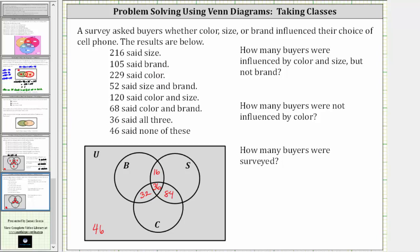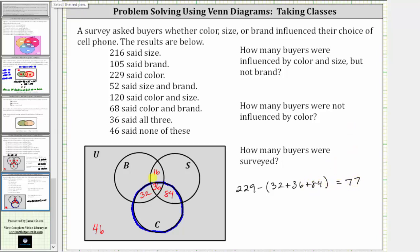Next, 229 said color, and therefore there are 229 buyers in set C. Notice how there are already 32 plus 36 plus 84 buyers in this set. To determine the number of buyers influenced only by color, we take 229 and subtract the sum of 32, 36, and 84. There are 77 buyers in this region, influenced only by color.